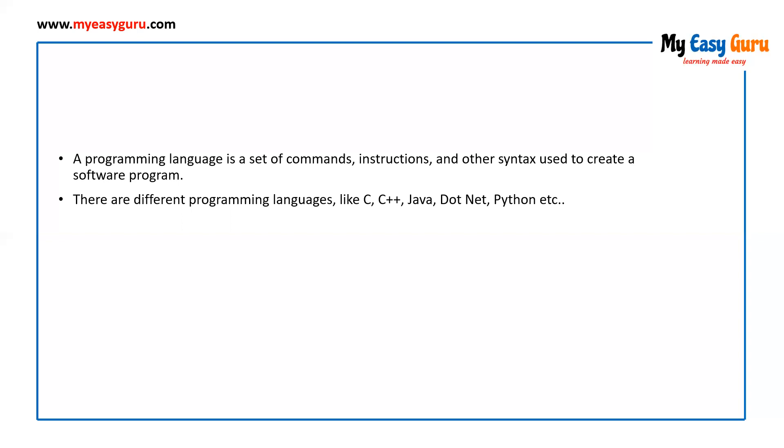Based on the byte code, the system will perform the task. When the task is complete, the result will again be converted to human understandable format. Every programming language is simply a human understandable language, which means programming languages cannot be understood by the systems directly. Every program has compilers or interpreters — for example, in C language, you compile the program before running it. Without compiling the program, you cannot run it.